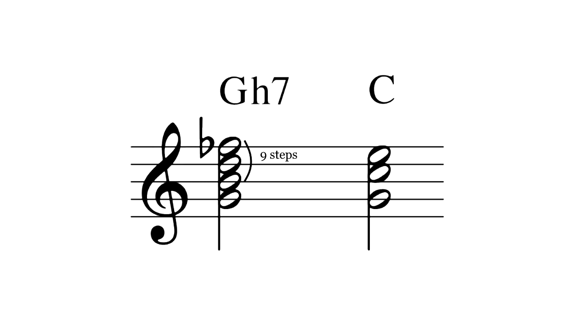Resolving to the 1 chord, the b4 is a small semitone, one step above the 3, while the natural 4 is a large or diatonic semitone, two steps above the 3. This change smooths out and strengthens the resolution.